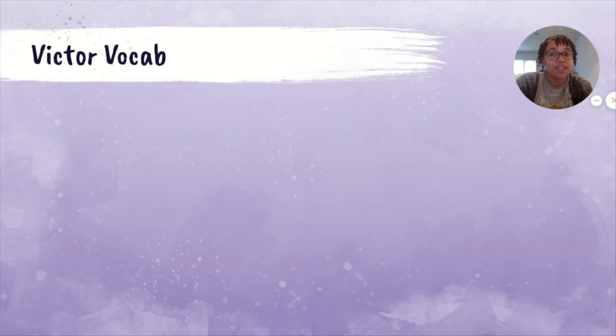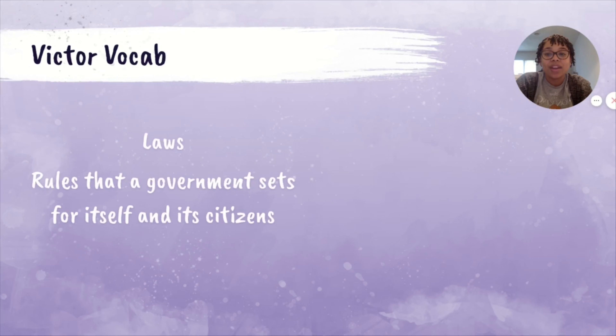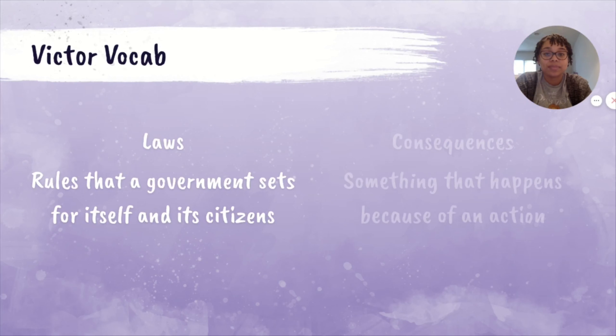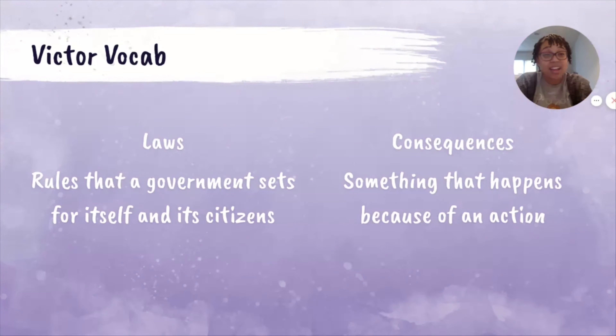Let's look at our Victor vocab — this is the vocab that's going to make us victorious in our lesson today. We have laws. Laws are rules that the government sets for itself and its citizens. Consequences are something that happens because of an action. Consequences can be good and consequences can be bad.